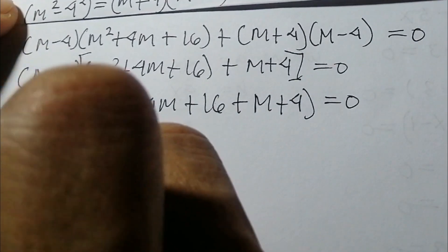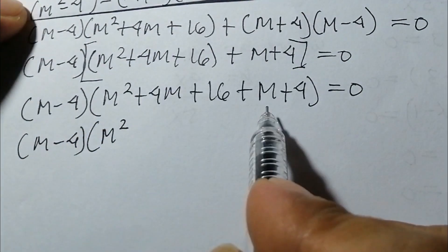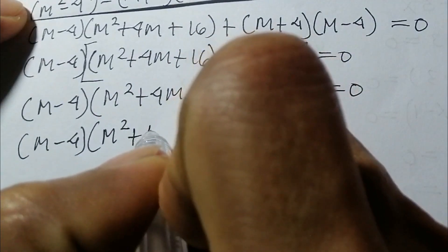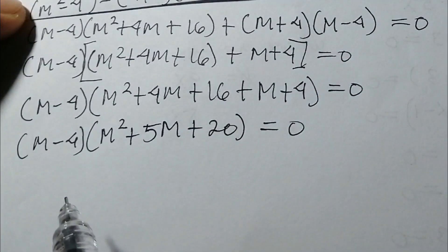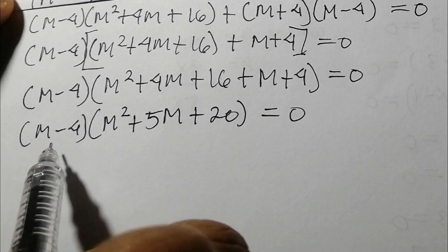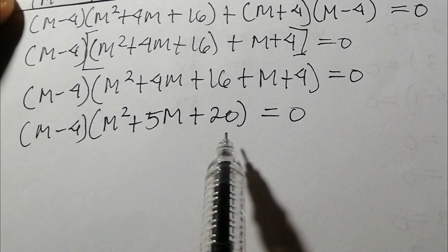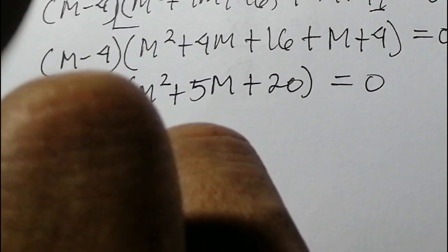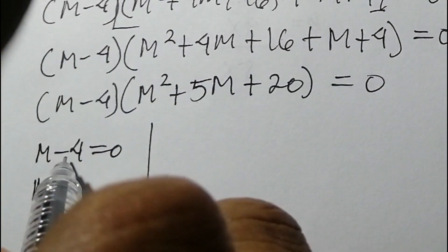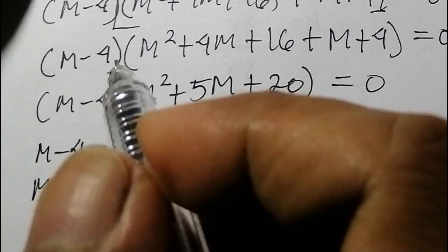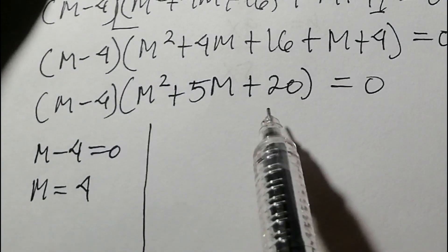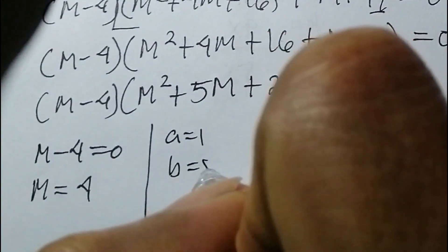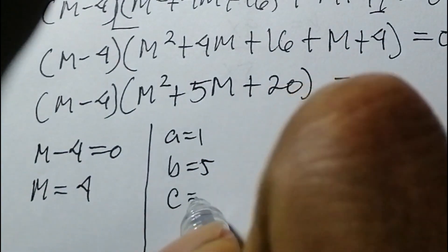Simplifying inside: m minus 4 times (m² plus 5m plus 20) equals zero. From the first factor, m minus 4 equals zero gives us m equals 4. For the second factor, we will use the discriminant formula, with a equals 1, b equals 5, and c equals 20.